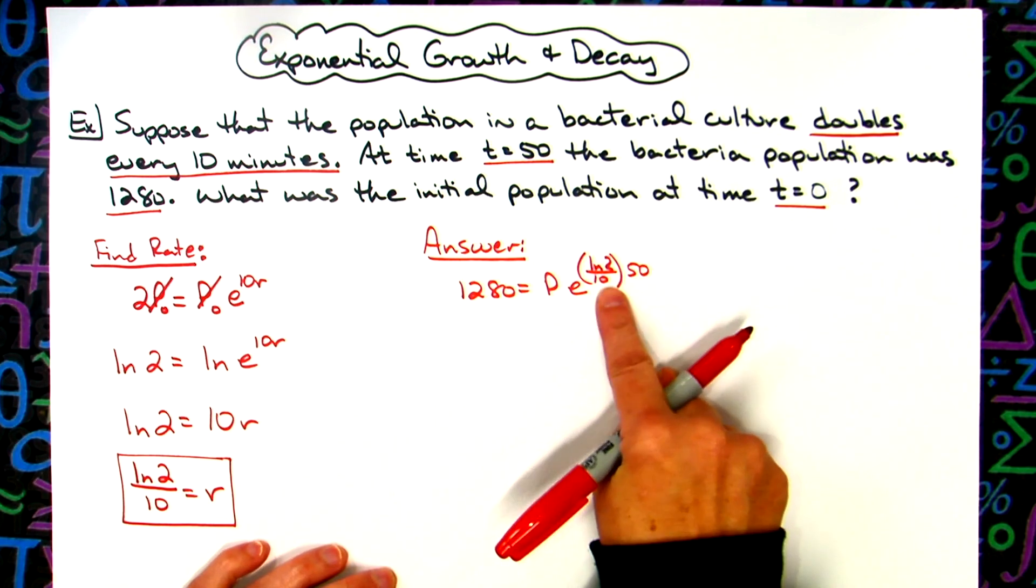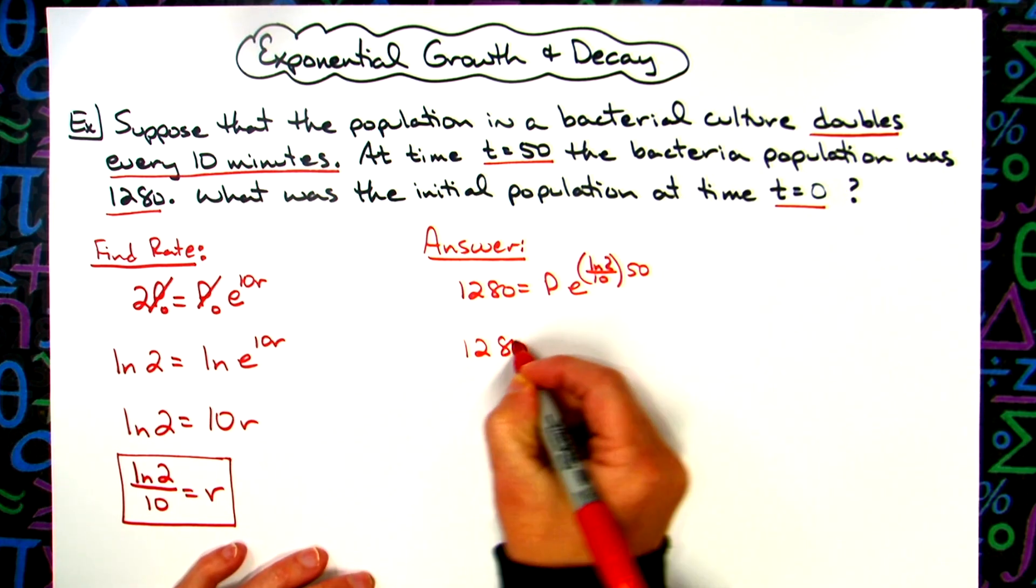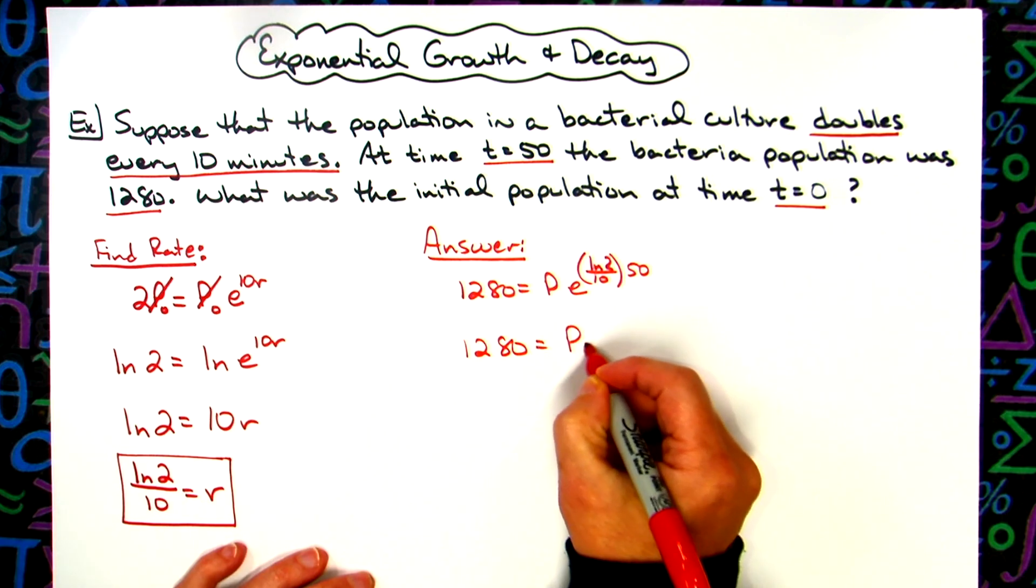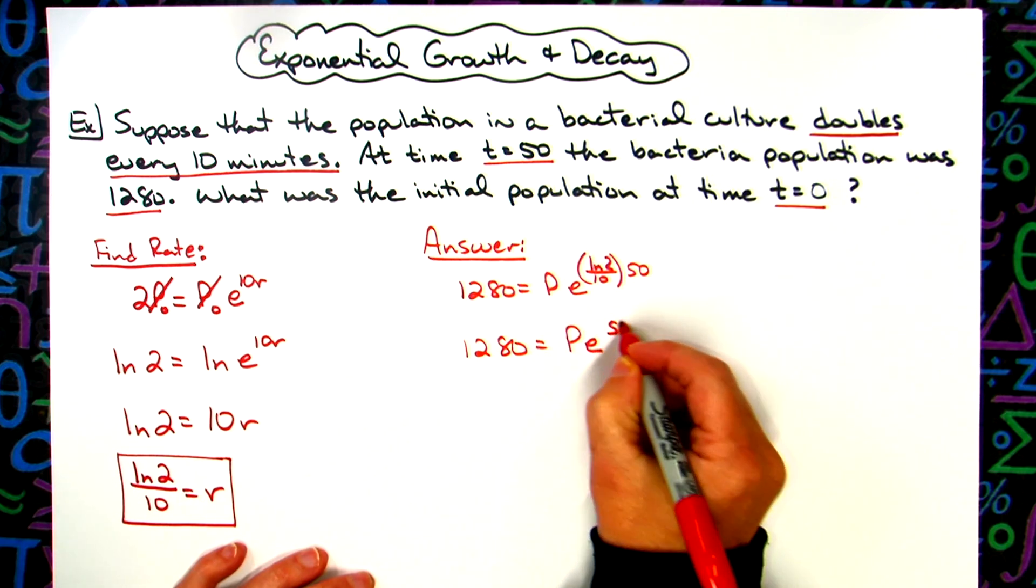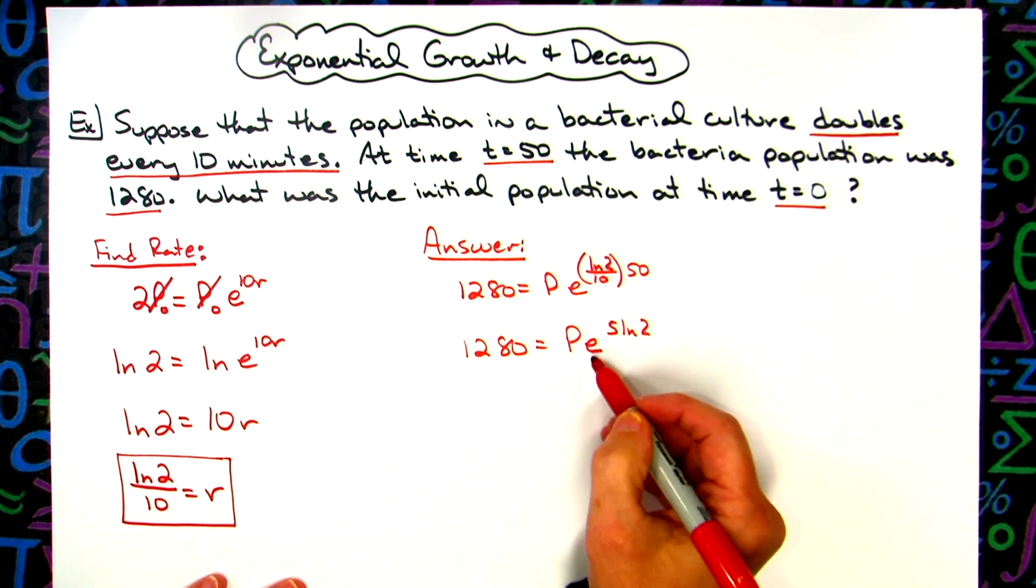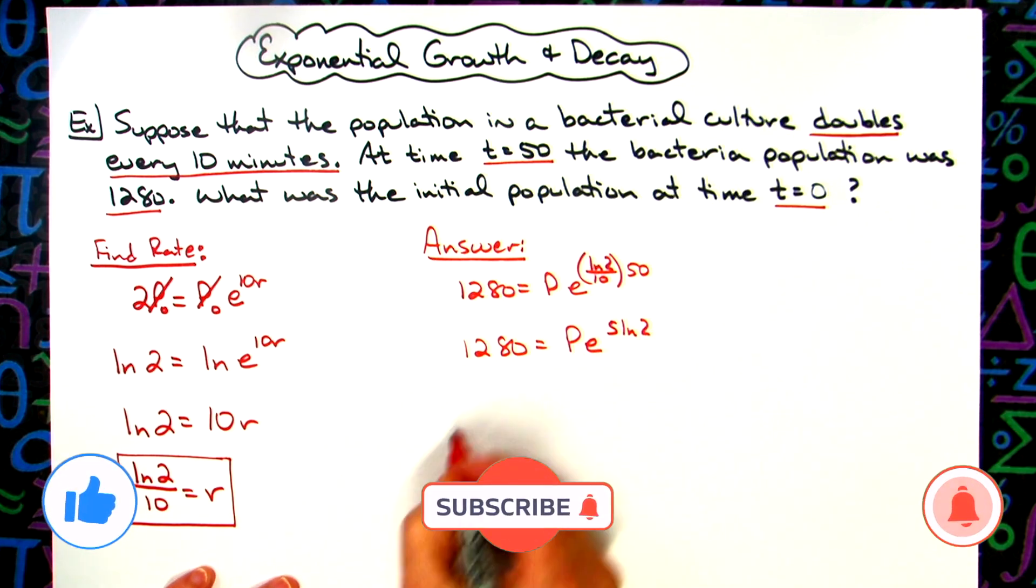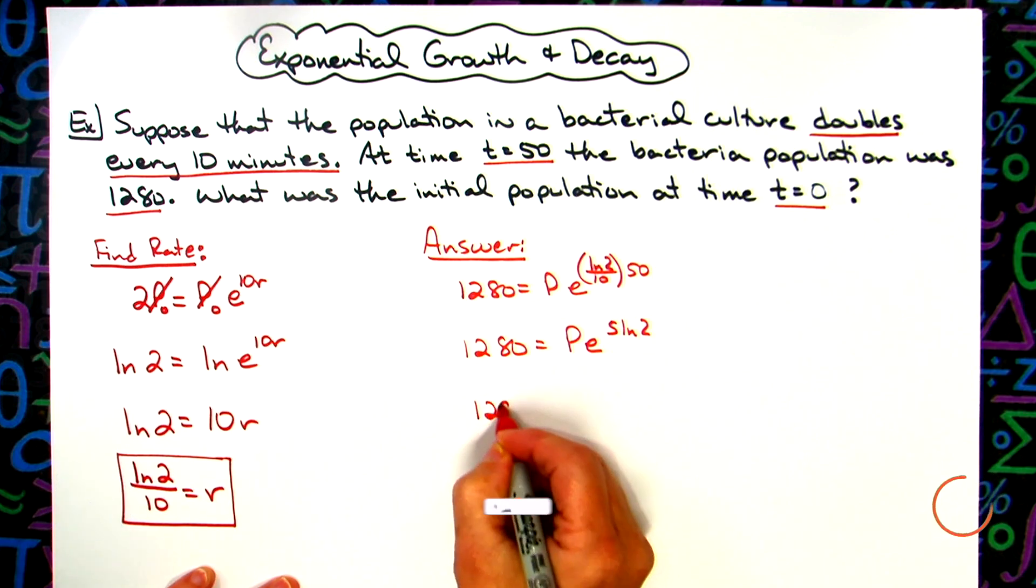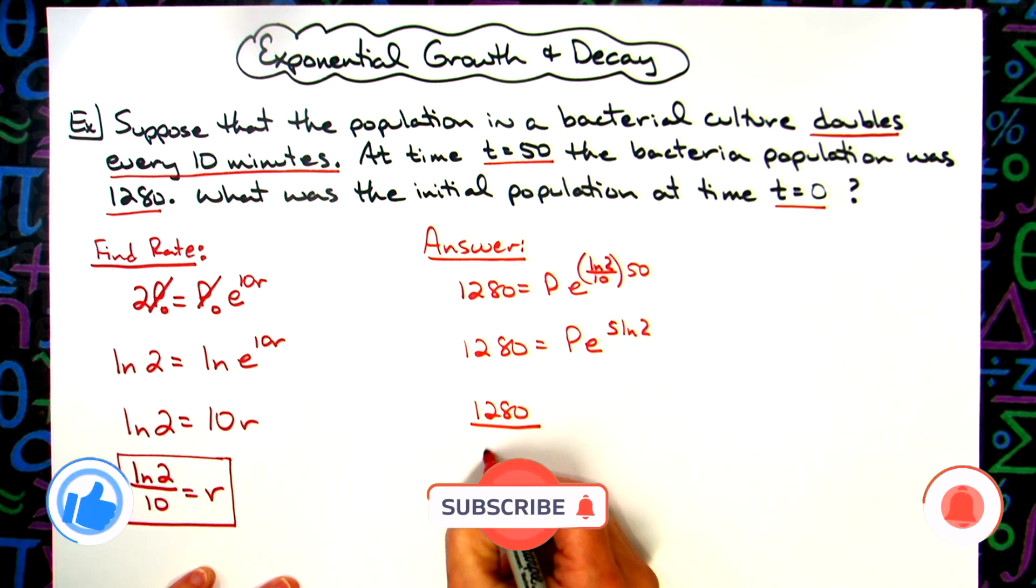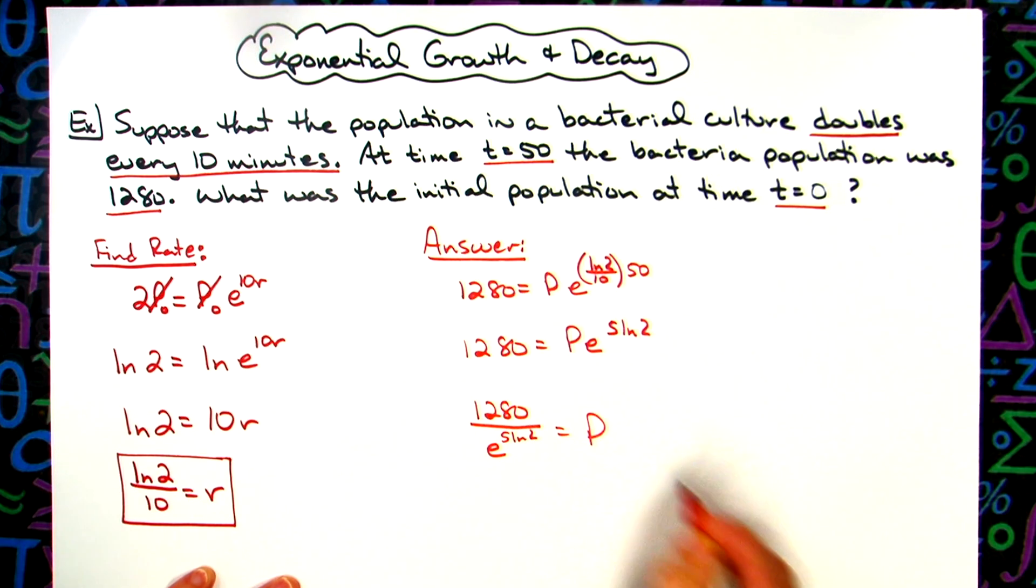This is going to simplify really nicely. 50 divided by 10 is going to give me a 5. So I'll have 1280 is equal to P times e raised to the 5 natural log of 2, and I'm trying to solve for P there, so I'm just going to divide both sides of the equation by e raised to the 5 natural log of 2. So I'll have 1280 over e raised to the 5 natural log of 2, and that's my population.